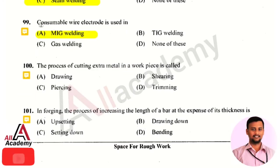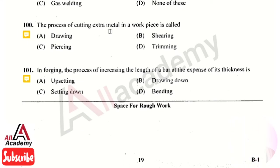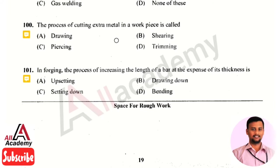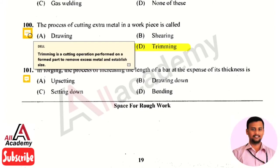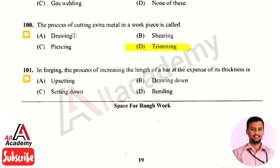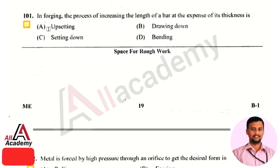The next question: the process of cutting extra metal from a workpiece is called — the right answer is option 4, that is trimming. Trimming is a cutting operation performed on formed parts to remove excess metal to maintain the actual size. It is a process to remove excess or extra material from a workpiece.